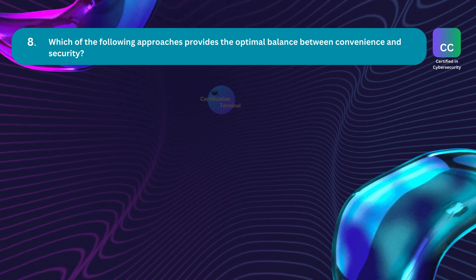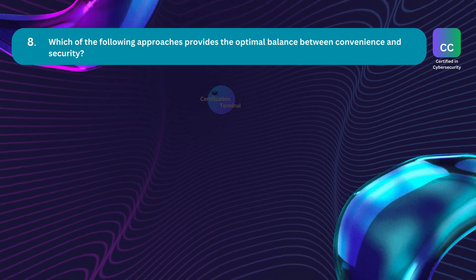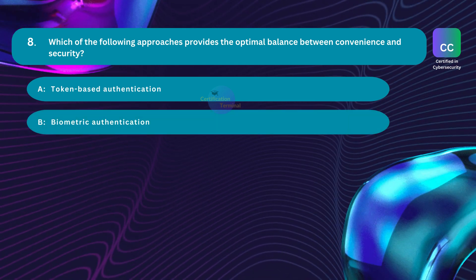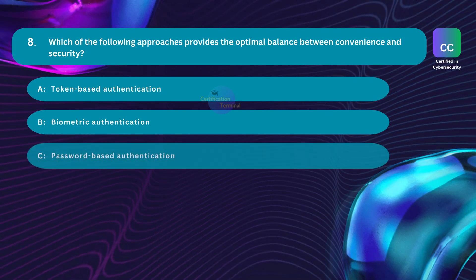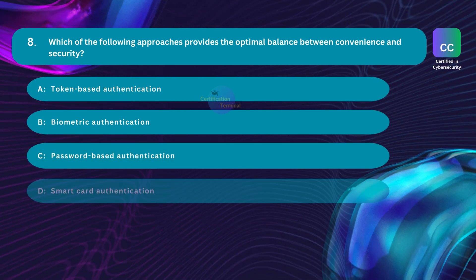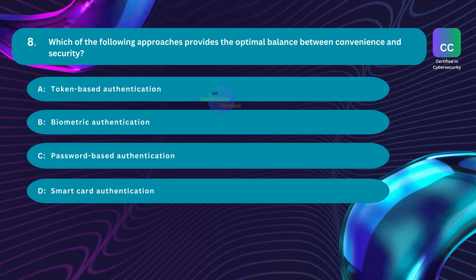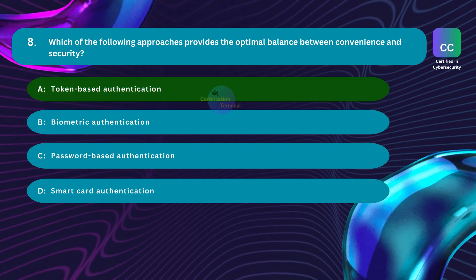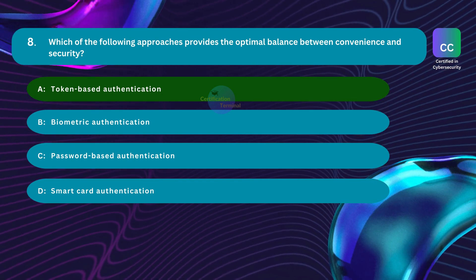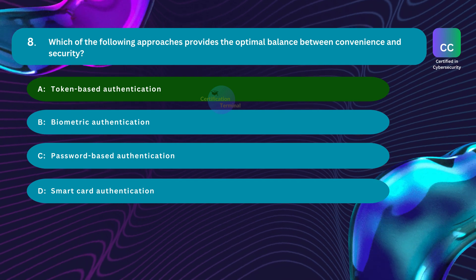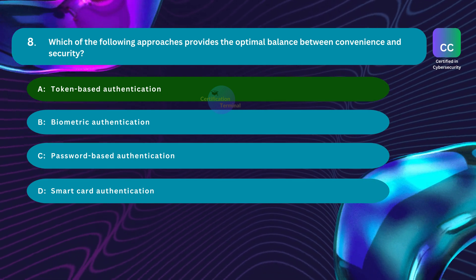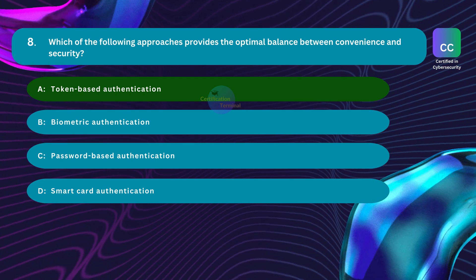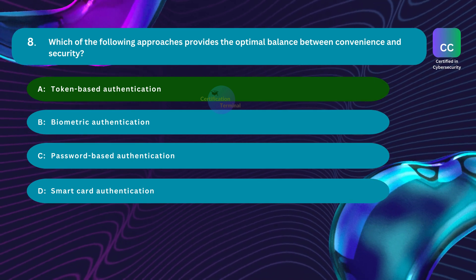Question number eight: Which of the following approaches provides the optimal balance between convenience and security? Option A: token-based authentication. Option B: biometric authentication. Option C: password-based authentication. Option D: smart card authentication. The correct answer is Option A: token-based authentication. Token-based authentication involves the use of physical devices or software tokens to generate one-time passcodes, providing a good balance between convenience and security.